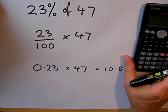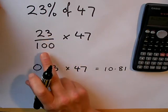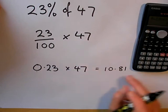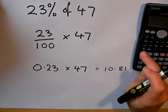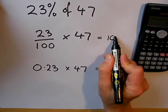In exactly the same way, if I take 47, multiply it by the top number, divide by the bottom number, I also get 10.81.